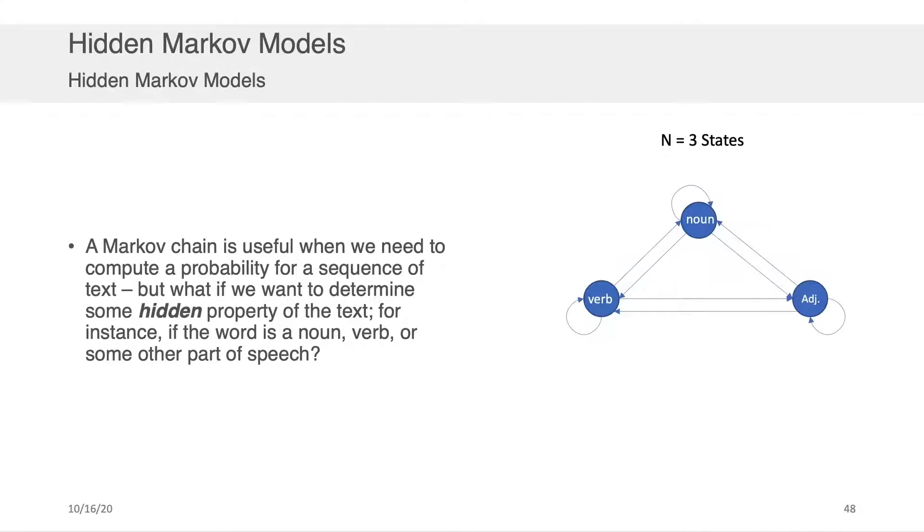So these Markov chains are useful when you want to compute the probability for a sequence of text. You may recall that we did that for sentences that came from Nietzsche and sentences that came from Bertrand Russell. But what if we want to determine some hidden property of the text? For instance, what if we want to know if a word is a noun, a verb, or some other part of speech? So basically, what if our states really look like this? But when you look at text, the text doesn't say noun, verb, verb, noun, adjective. You get some observations and you need a way of mapping those observations back to these hidden states. So the question is how do we do that?